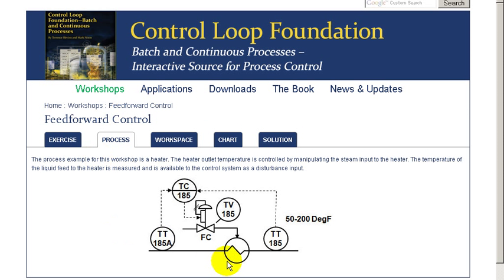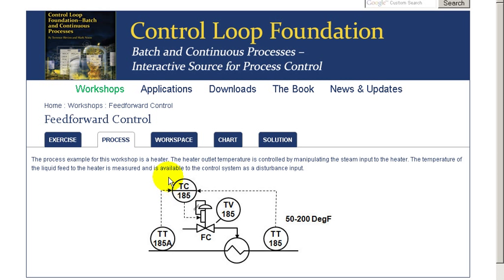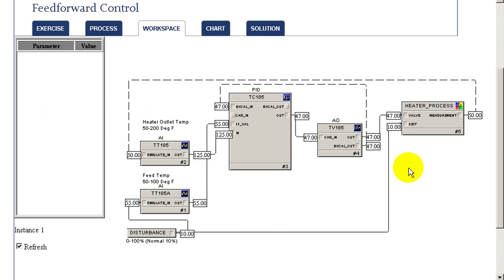For this exercise, we're using a steam heater in which a liquid flows through the heater and is heated. We're measuring the outlet temperature. A PID controller is adjusting the steam flow. The inlet temperature is a measured disturbance, which we're going to use as a feedforward input to our temperature control. So let's get started with our exercise.